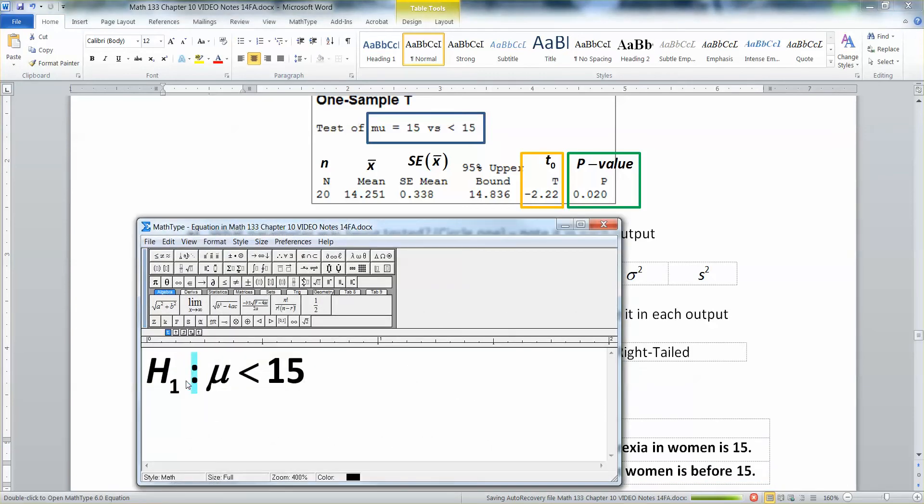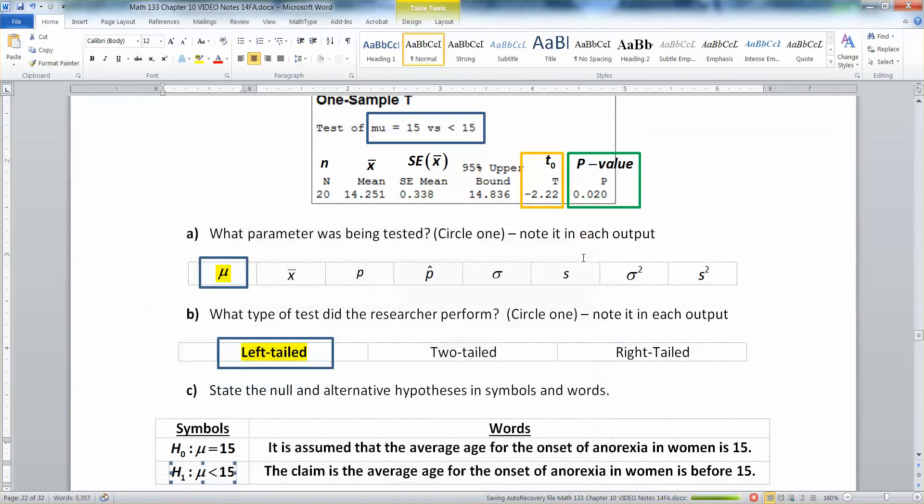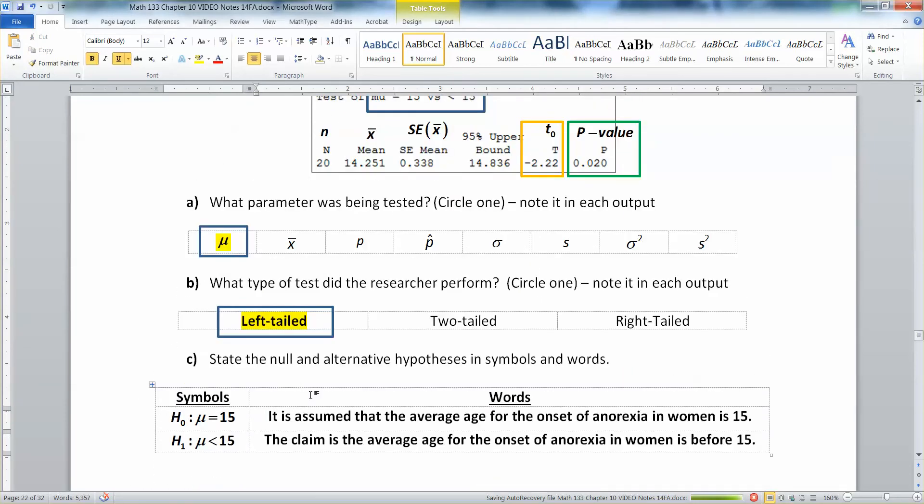By the way just notice you have to have a colon in here. Don't write an equal sign. So it's H1, that's the alternative, colon and then it's mu is less than 15. All right then in words what we're saying is it is assumed that the average age for the onset of anorexia in women is 15. So that's the average age we assume to be true. The claim is that the average age for the onset of anorexia in women is before 15. We're gonna try to prove it.